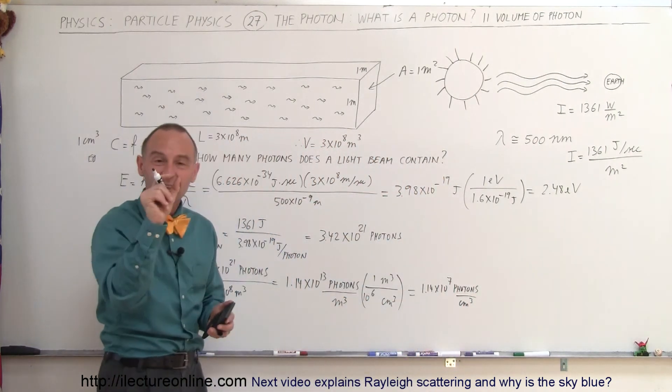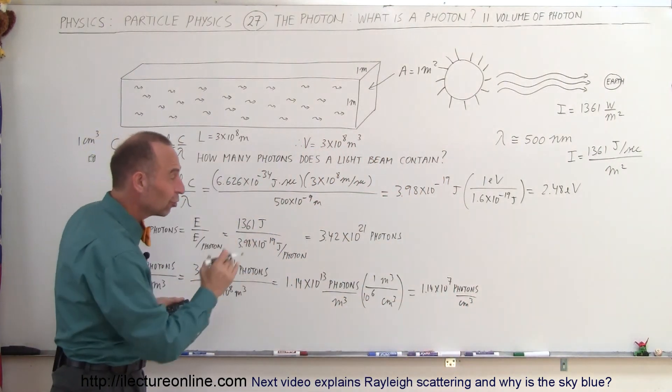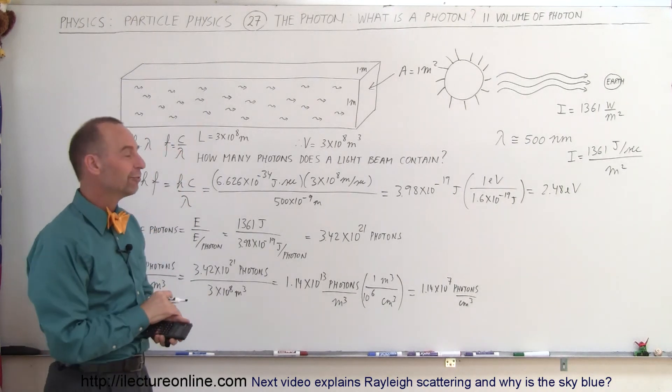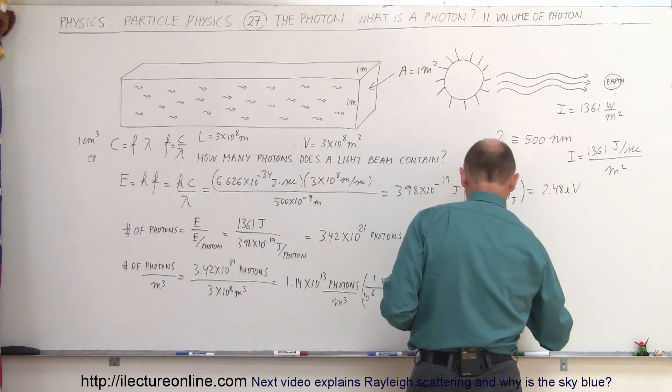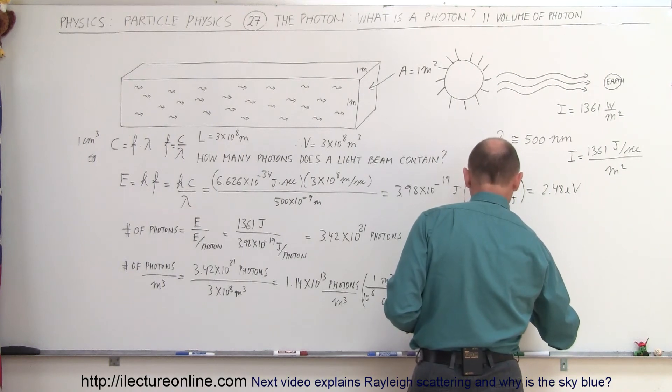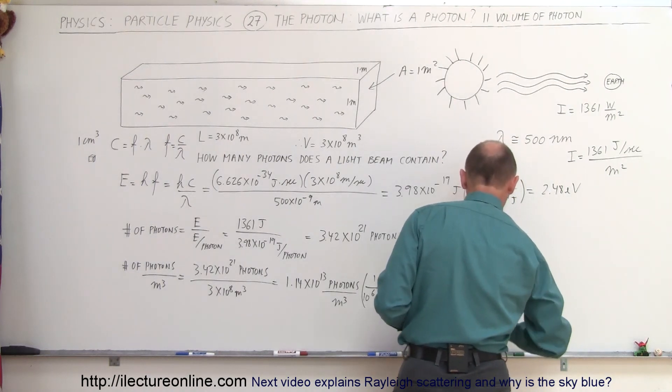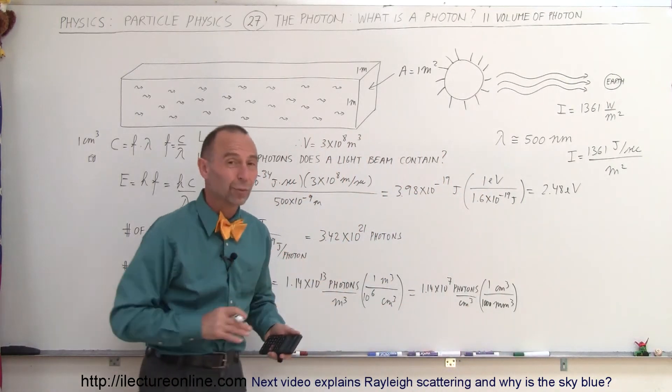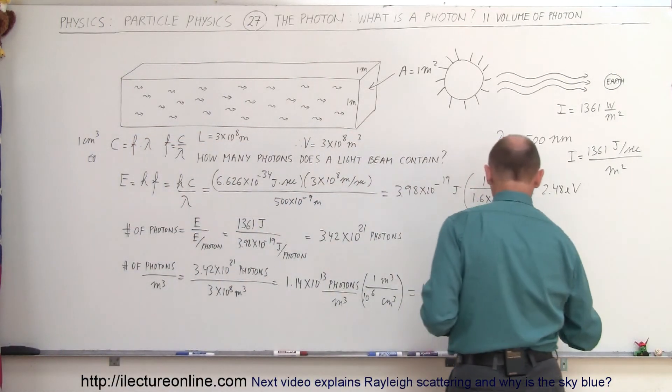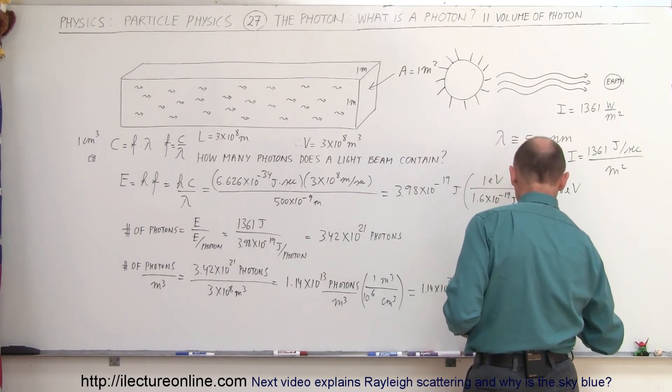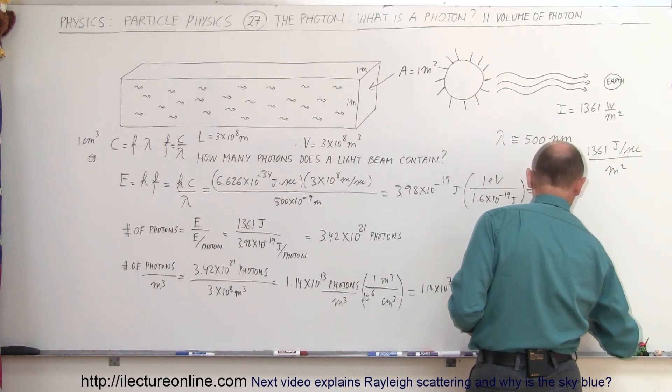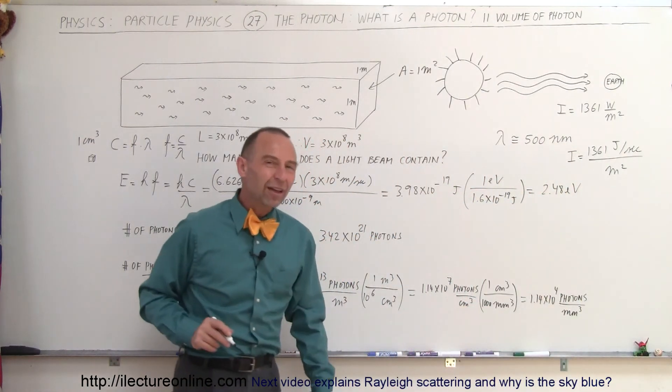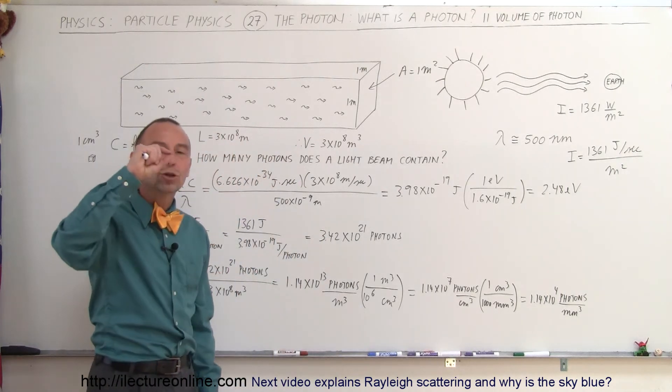So in every cubic centimeter of space, sunlight reaching us, there's 11 million photons. Wow, how much is that per cubic millimeter? Well, let's convert. So we have cubic millimeters at the bottom and cubic centimeters at the top. For every one cubic centimeter, there's 1,000 cubic millimeters because it's a 10 to 1 ratio. We have to cube that. So that means there's 1.14 times 10 to the 4th photons per cubic millimeter. 11,400 photons in a cubic millimeter.